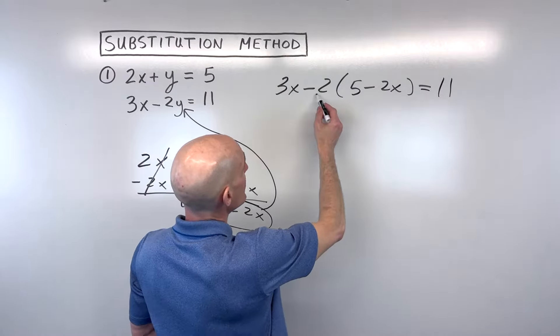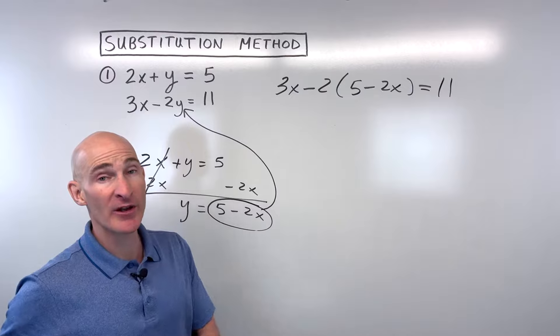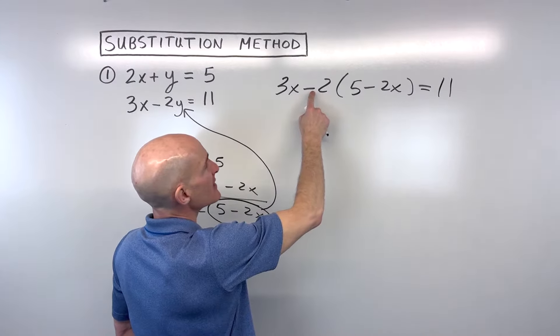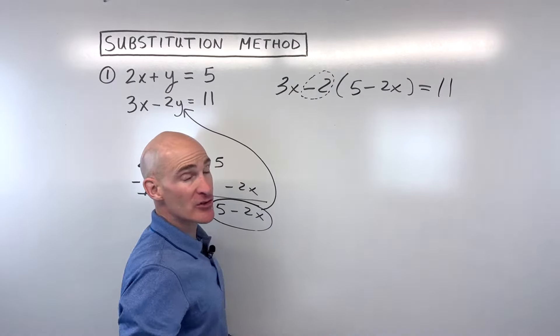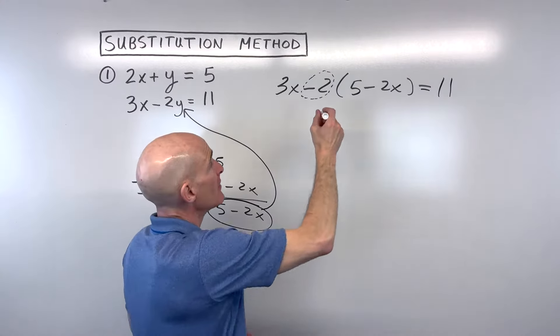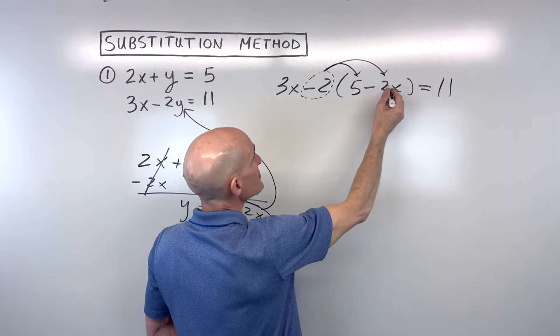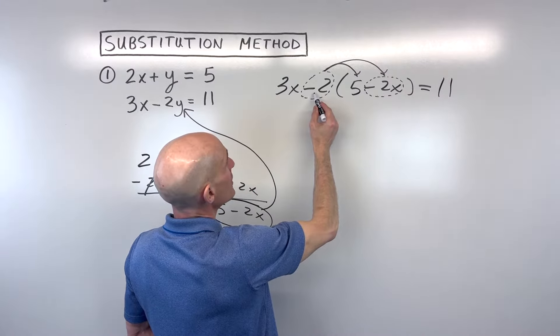Now what you're going to want to do is distribute, and here's another mistake that sometimes students make - when you see a minus, think of that as a negative. So what I'm doing in my mind is I'm capturing this sign with the number. So I think of that as a negative 2 that I'm distributing into the parentheses. Same thing here. See this minus 2x? This is like a negative 2x. So let's go ahead and distribute.